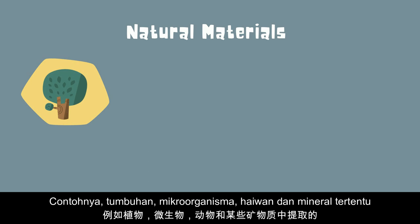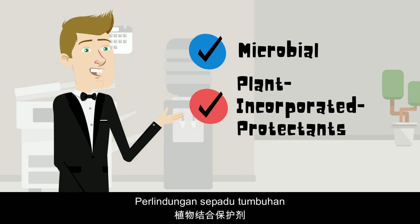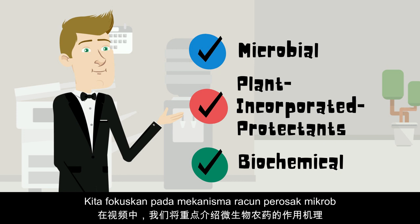Biopesticides are certain types of pesticides derived from natural materials such as plants, microorganisms, animals, and certain minerals. They are divided into three classes which include microbial pesticides, plant incorporated protectants, and biochemical pesticides. In this video we will focus on the mechanism of microbial pesticides.